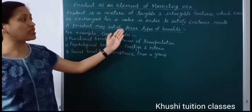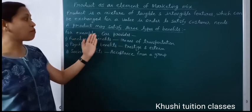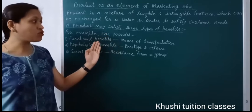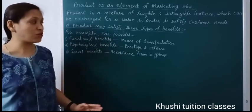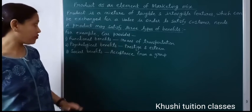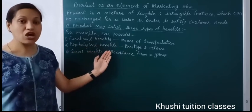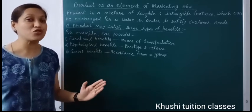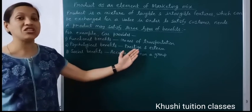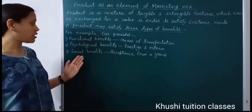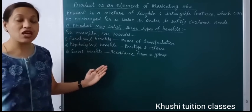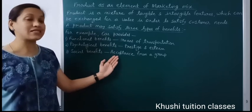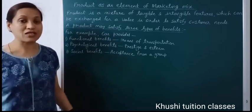A product may satisfy three types of benefits. For example, a car provides: first, functional benefit — with the use of a car you can go from one place to another, so it is a means of transportation. Second, psychological benefit — the brand image of the car will satisfy the prestige and esteem need of the person. Third, social benefits — if you have certain amenities available, you are accepted by a group and you are a part of society.